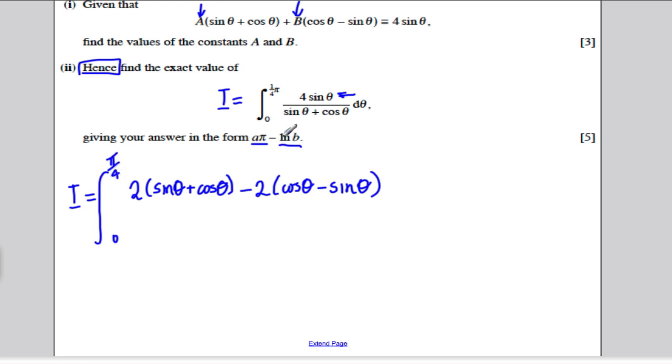cos theta minus sine theta. So this was all an integral between 0 and pi by 4, don't forget. And all of that divided by sine theta plus cos theta, d theta. So all we've done with this integral is replace the top by what we've done in question 1.